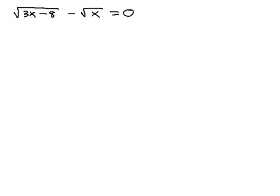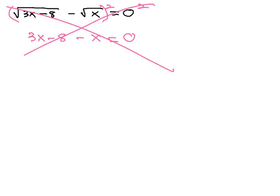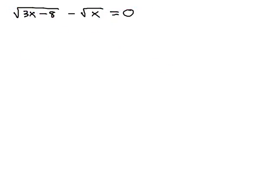With square roots, we found out we cannot, and this is a common error I'll see, square both sides to get 3x minus 8 minus x equals 0. That's wrong. Can't do that. Because when we square, we've got twice the product in the middle. We can't just square the two pieces. You cannot distribute squared through parentheses.